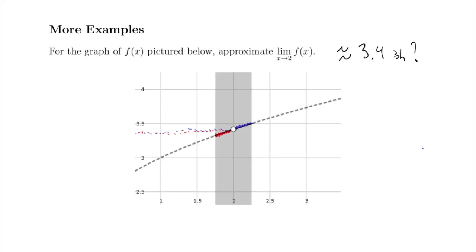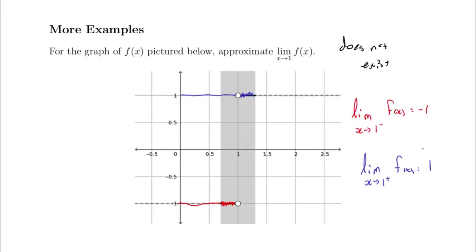We can get a really good guess sometimes, and other times not as good a guess as we'd like. But hopefully that's helpful to see. Left-sided limit, right-sided limit — make sure they match up. That's all we've got for this. We're going to take a look at some more approximation techniques in the next video.